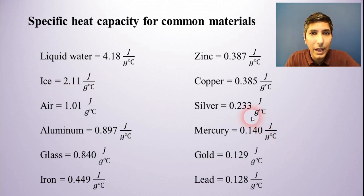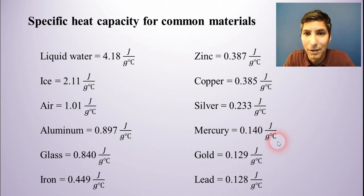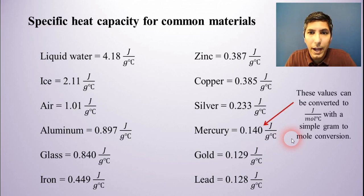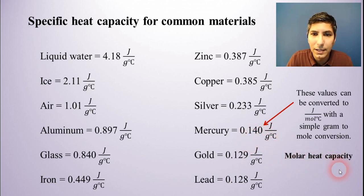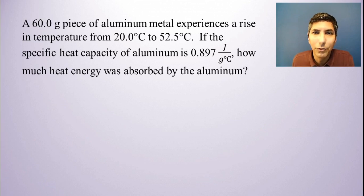Sometimes you may have a specific heat capacity given to you in joules per gram degree Celsius, but the problem might want you to convert this to joules per mole degree Celsius. If you are asked to do that, this is just a simple gram-to-mole calculation, a simple conversion. If you do that, then you have what's called the molar heat capacity. Specific heat capacity is given in grams; the molar heat capacity will be in joules per mole degree Celsius. We're going to work a couple of problems with the equation Q equals MC delta T.